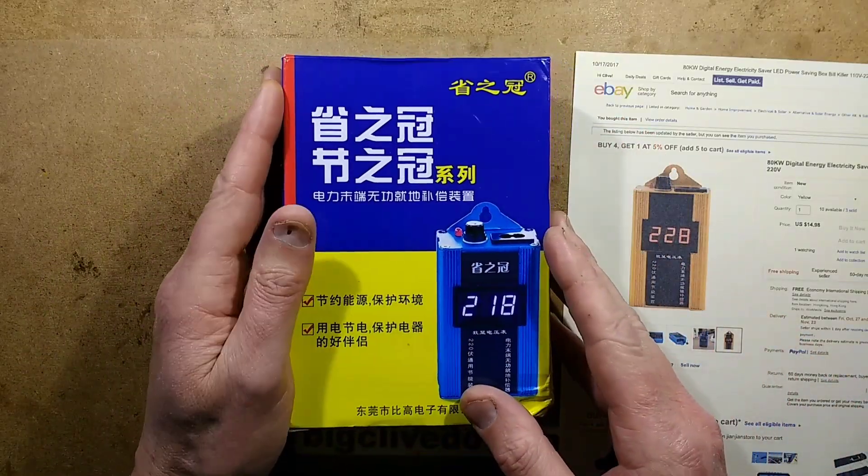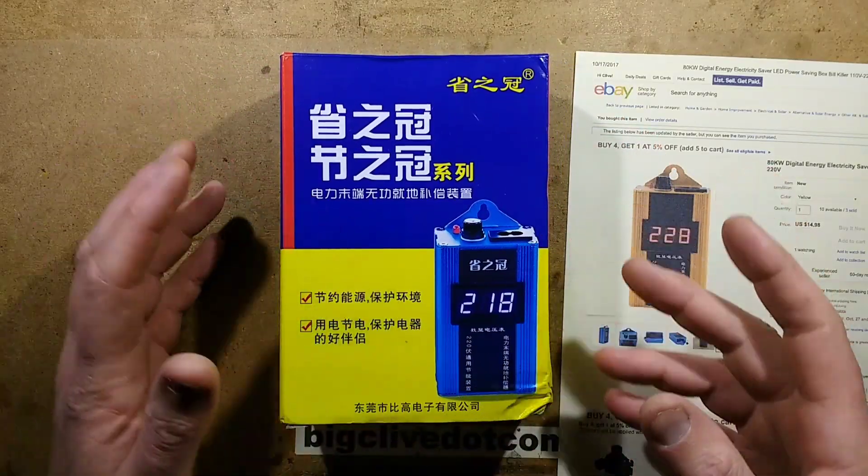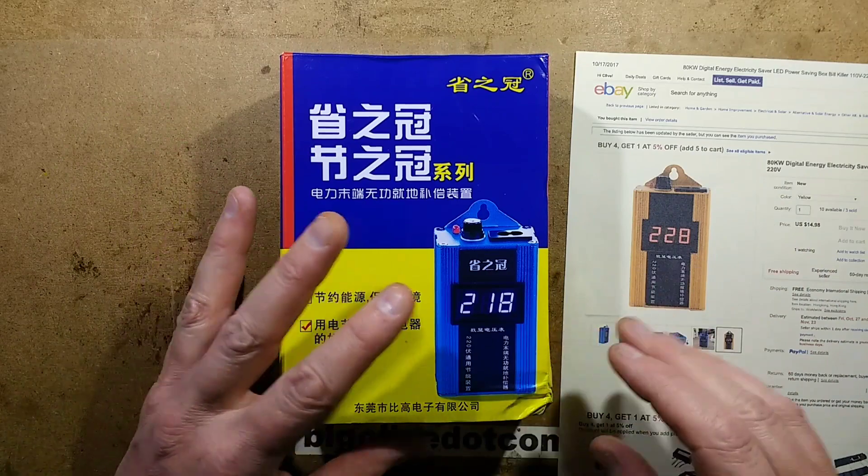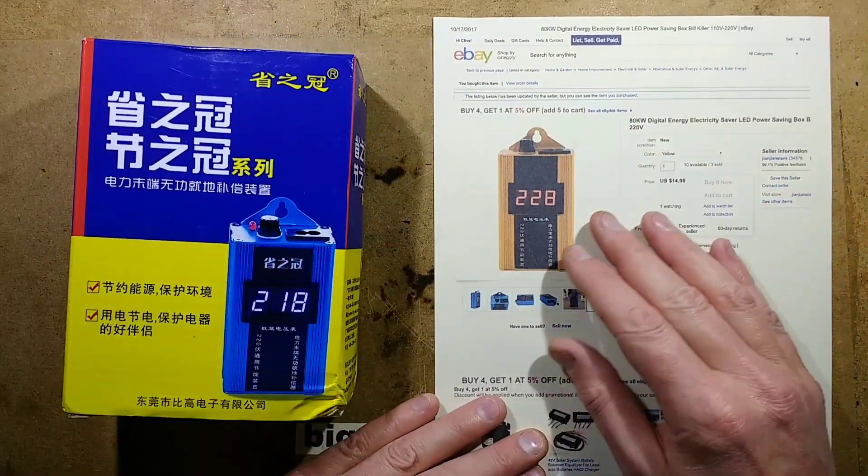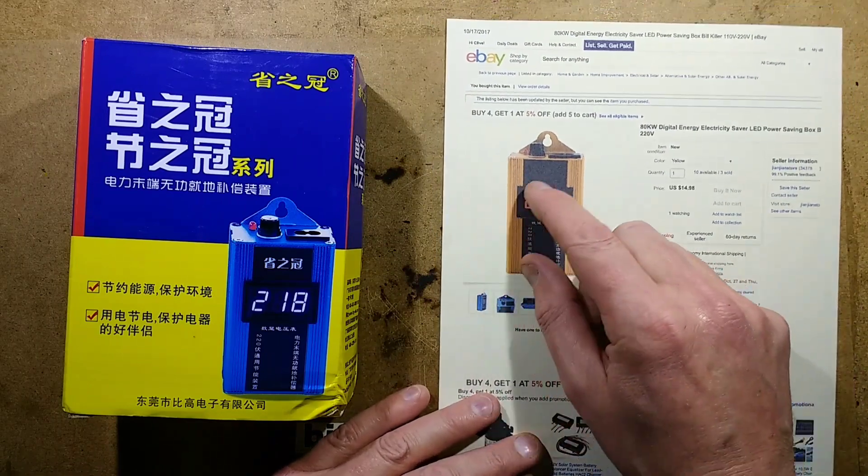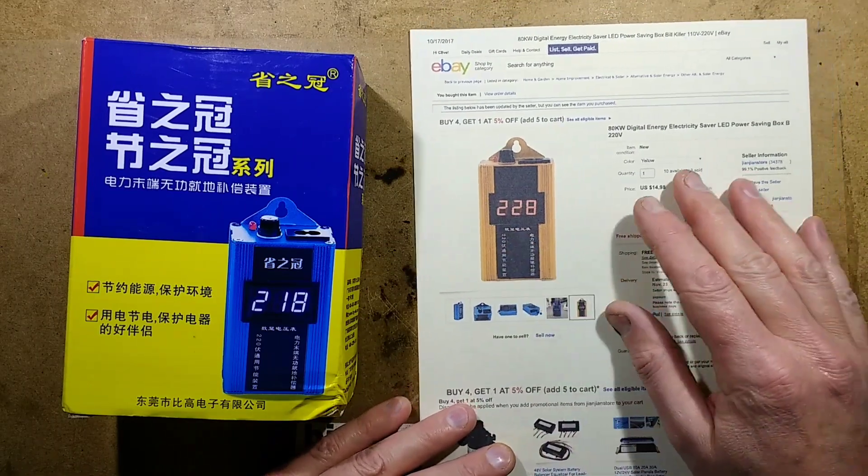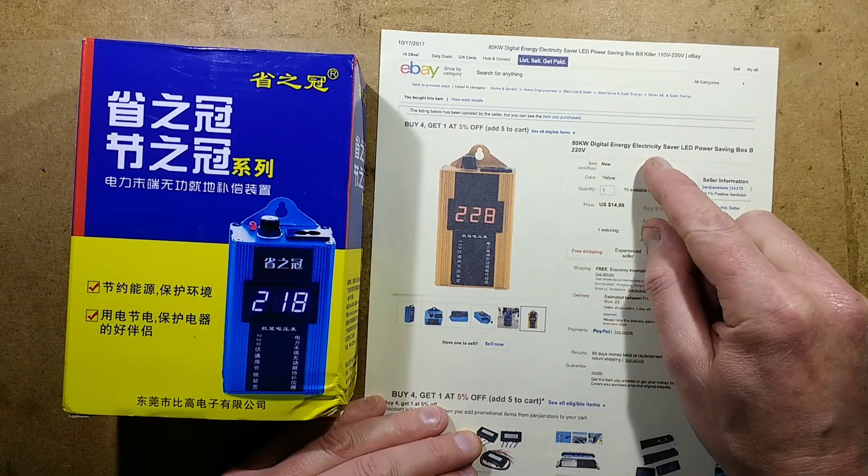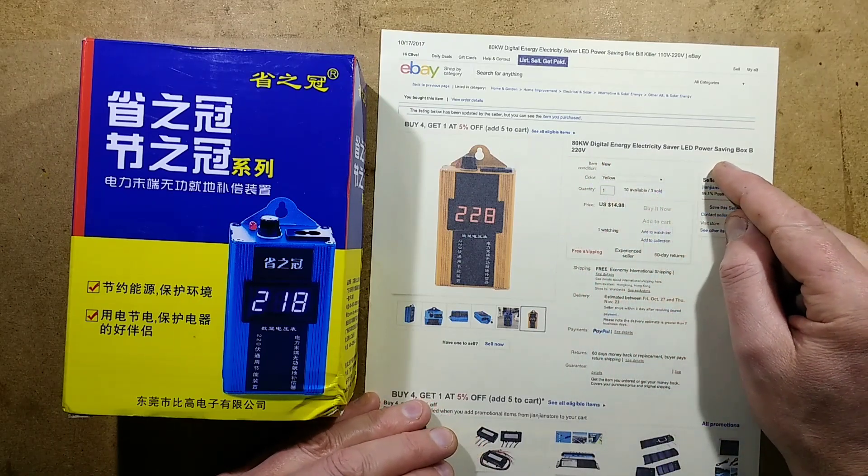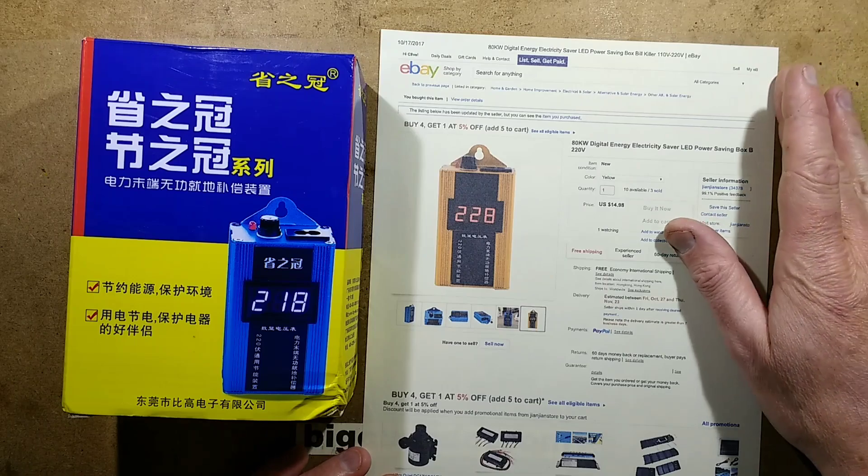I've looked at these whole house energy savers before, the ones that are supposed to reduce your electricity bill, but are a bit dubious. And this one is slightly different, so I thought, let's see if they've changed much. This one, the main thing is it's got a digital readout on it, and it's described as an 80 kilowatt digital energy electricity saver LED power saving box bill killer.